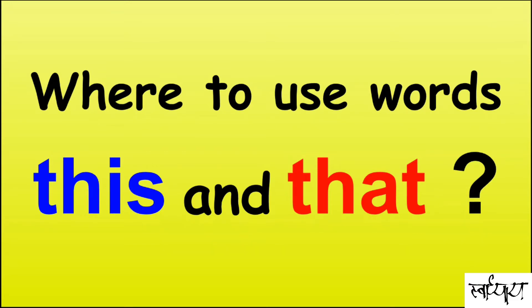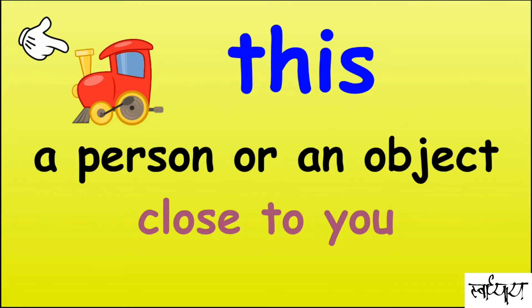'This' is used for a person or an object close to you. The picture here shows the object is near you, so we say: this is a toy train.